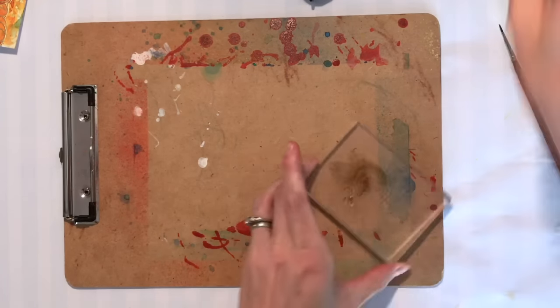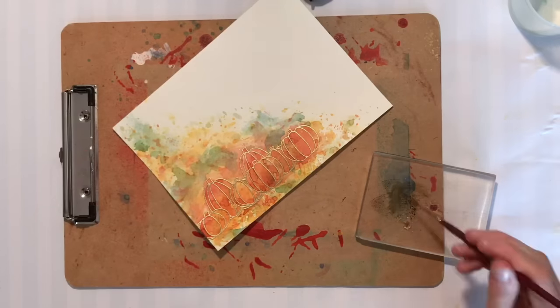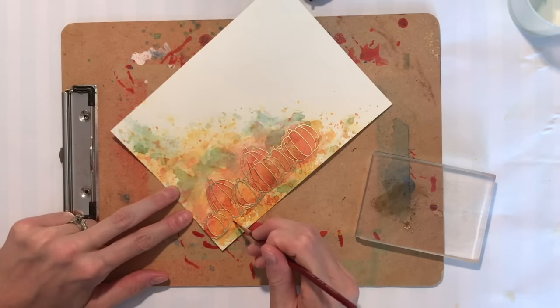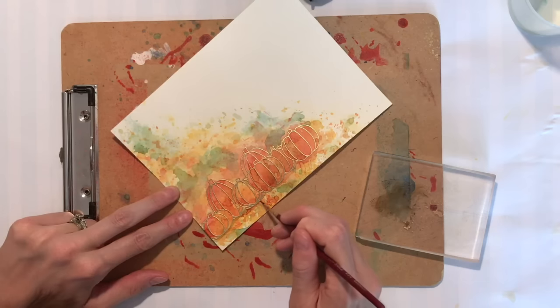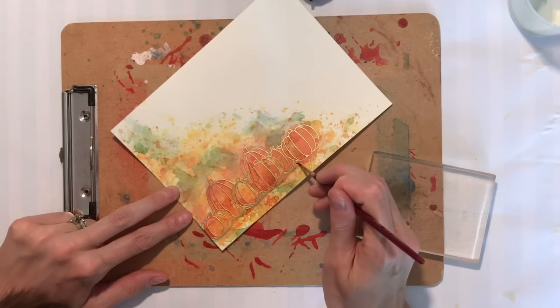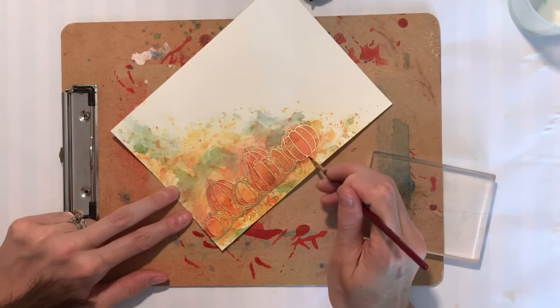I took the Memento ink, which is called Rich Cocoa, and I smushed it onto an acrylic block, spritzed it with water, and now I'm taking my paintbrush here and at the bottom of the pumpkins, the base of the pumpkins, I am applying that watered down ink. This is going to create a shadow.